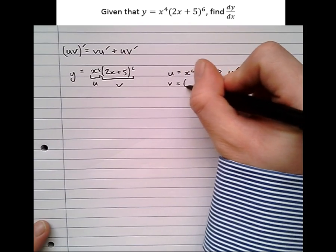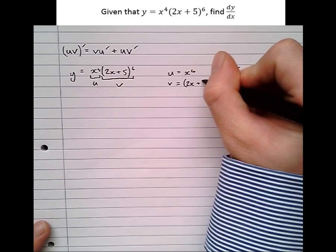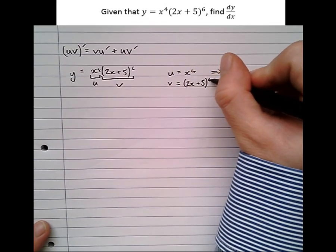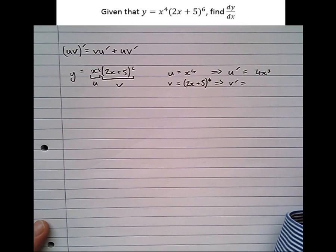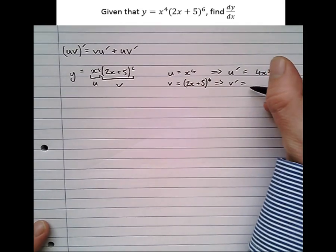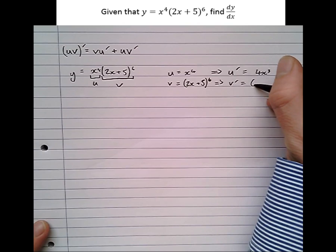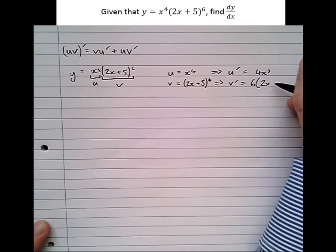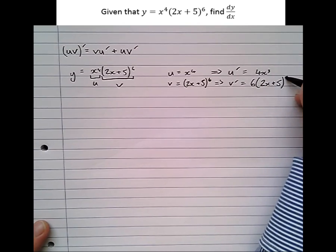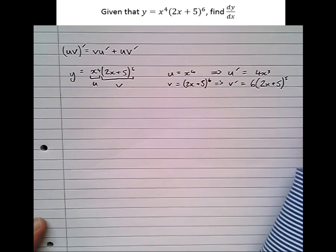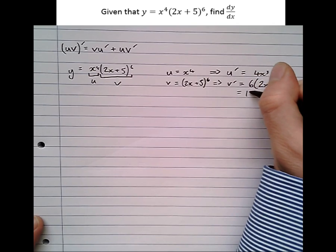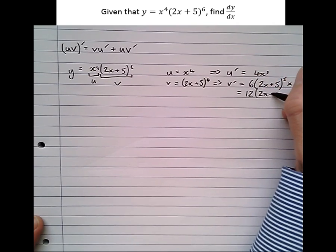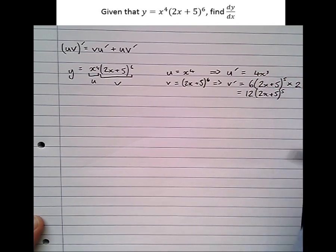v is the second function, (2x plus 5) to the power of 6, which means that v dash is a little bit more complicated. We're going to have to use the chain rule for this one. It becomes 6 times the bracket to the power of 5, then the extra step is multiplying by the differential of the bracket, times 2, which gives v dash equals 12(2x plus 5) to the power of 5.